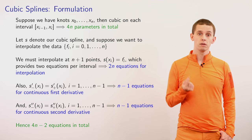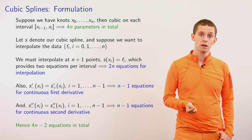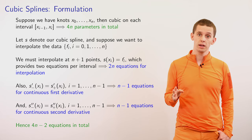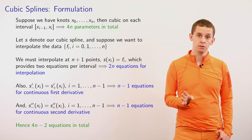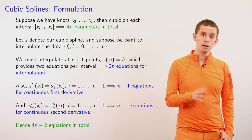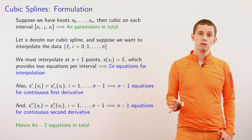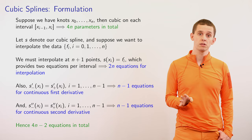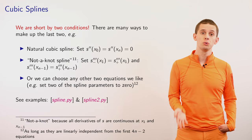If we look at maintaining that the first derivative is continuous, we look at all of the interior knots from x1 up to x_{n-1}, giving another n minus 1 equations. We can do the same thing for the second derivatives, giving another n minus 1 equations. So we have 4n parameters describing our cubics, and we've got 4n minus 2 equations in total, meaning we're short two conditions.